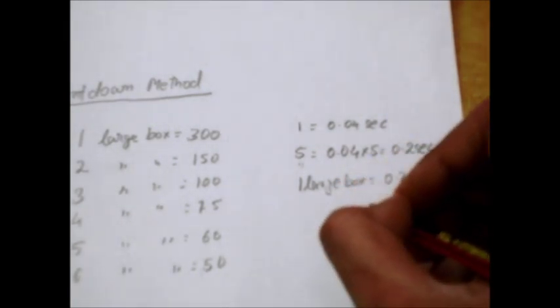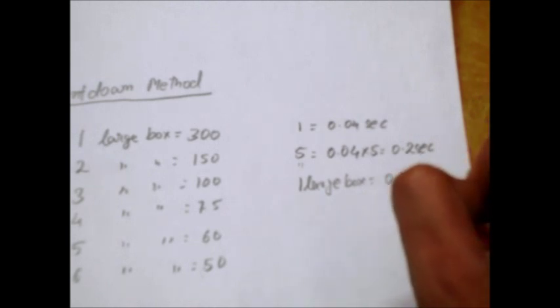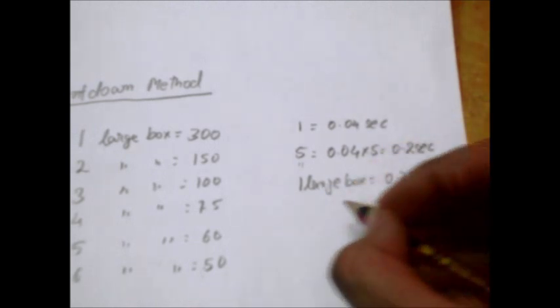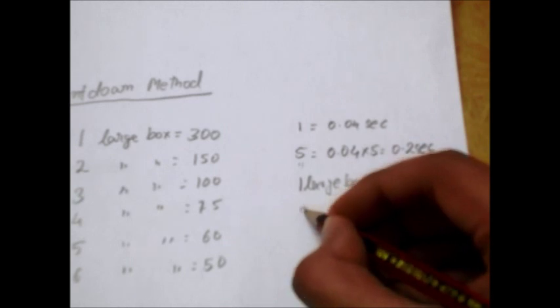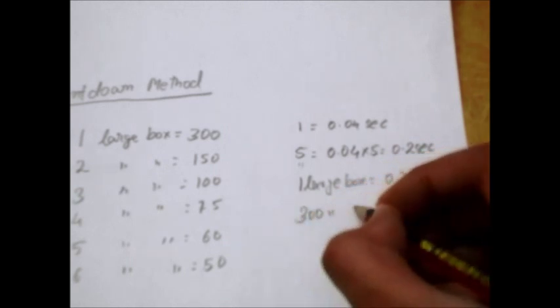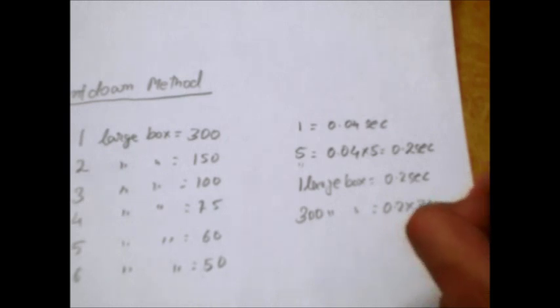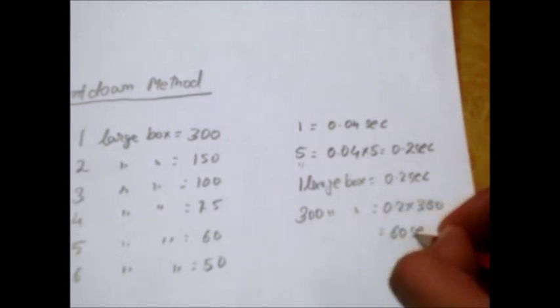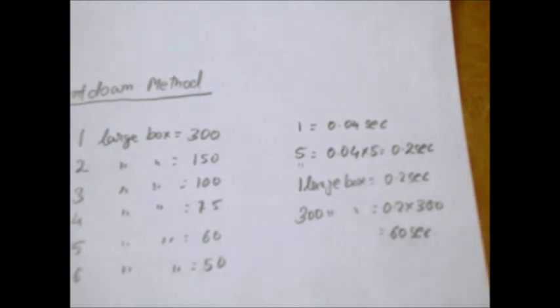So how many large boxes will constitute 60 seconds? That would be 300. 300 large boxes will constitute 0.2 into 300, which gives you 60 seconds or one minute. So 300 large boxes give you 60 seconds.